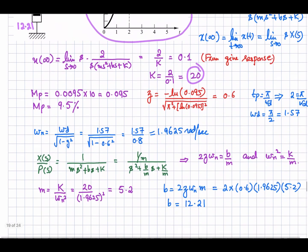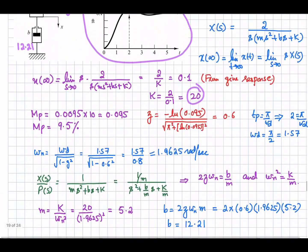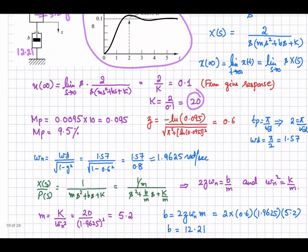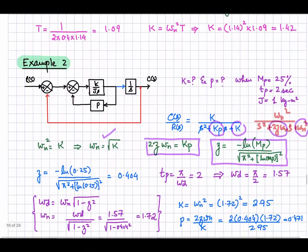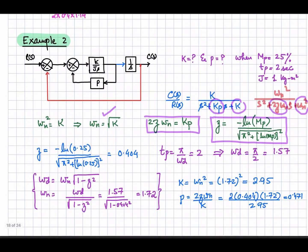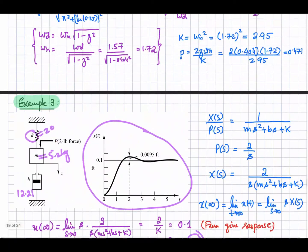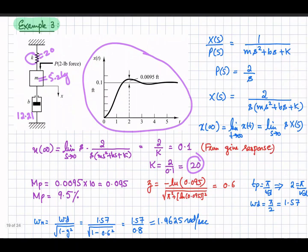To summarize this session, we discussed examples where, if the system is known and conditions are imposed, we can find the parameters using transient response specifications discussed in earlier videos. We can determine the response of the system in detail, and conversely determine the system from its response. If the system is given, we can find the response using the expressions we have already covered. Thank you very much.